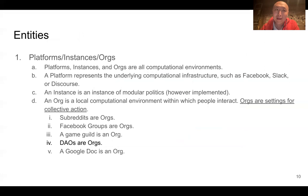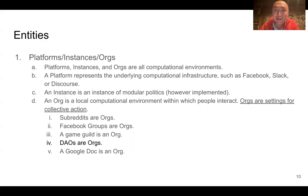This data model starts with something more germane to the online instance, though you'll see reflections of it in offline settings too. The code in which an online community lives — the platform, as well as instances and orgs — these are all computational environments. The platform specifically represents underlying computational infrastructure like Facebook, Slack, or Discourse. The instance is an instance of modular politics however implemented, whether as a hosted client, a server, or a protocol. An org matches more our traditional intuitions for a hosted online community in which people interact — things like Facebook groups, subreddits on Reddit, a game guild in World of Warcraft or EVE Online, or even DAOs on the blockchain.